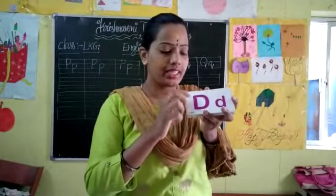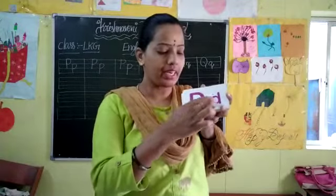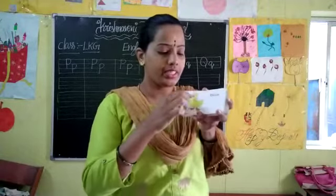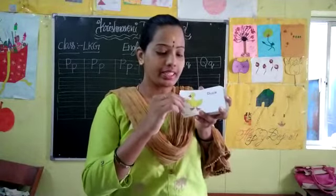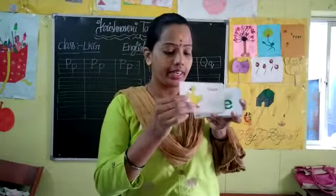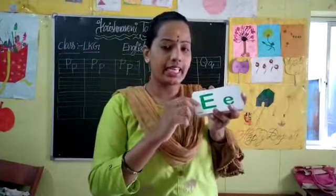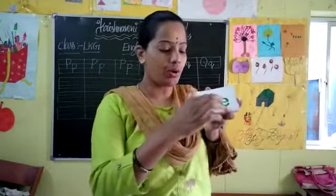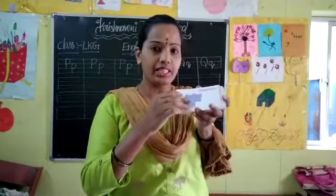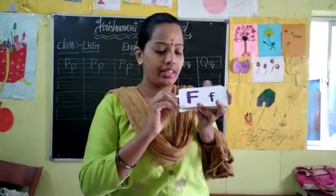And next letter is D. Capital D, small d. And the object is D for duck — see here, duck picture is there. D for duck. And next letter is E. Capital E, small e. E for elephant. E for elephant.